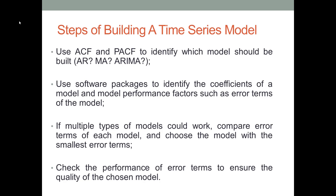The third step is optional. If multiple types of models could work, we want to compare the error terms of each model, and then choose the model with the smaller error terms. For example, according to our analysis of the ACF and PACF charts, if we find we could either use an AR1 model or a MA1 model, we look at each model's error term. We want to find the model with smaller error terms and then choose it for forecasting. This is the third step.